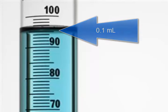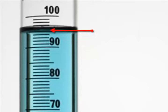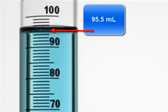In this particular case, looking at this graduated cylinder and measuring from the bottom of the meniscus, we could have 95.5 milliliters.